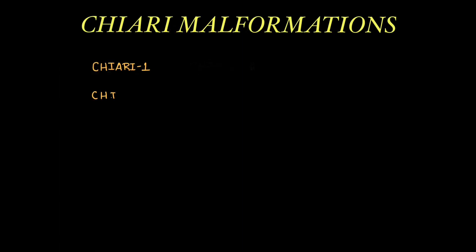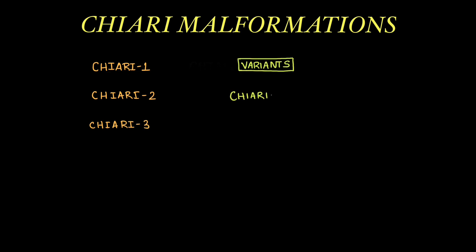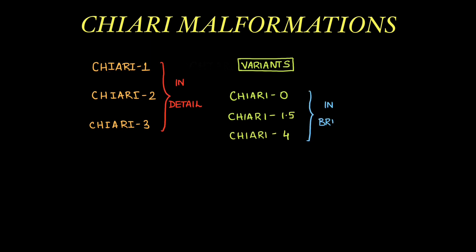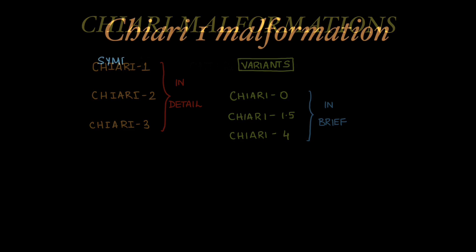Moving on to the actual discussion of Chiari malformations, there are three main types: Chiari 1, 2, and 3. The other types are considered variants — those are Chiari 0, Chiari 1.5, and Chiari 4. We will be discussing the main types in detail and the variants in brief.